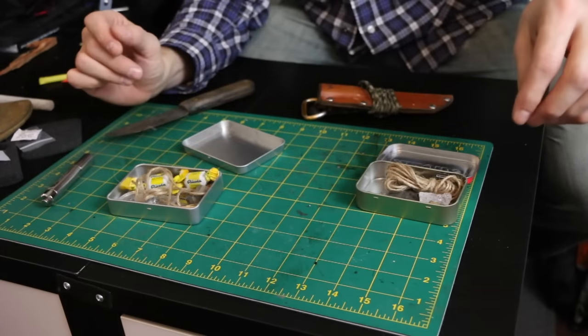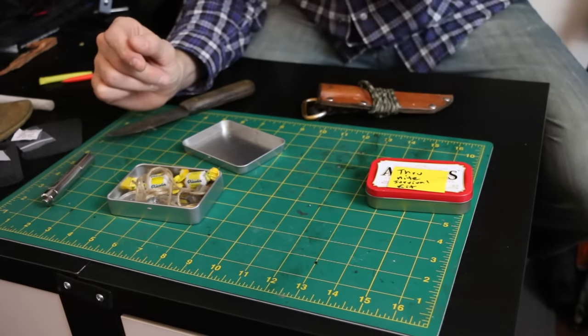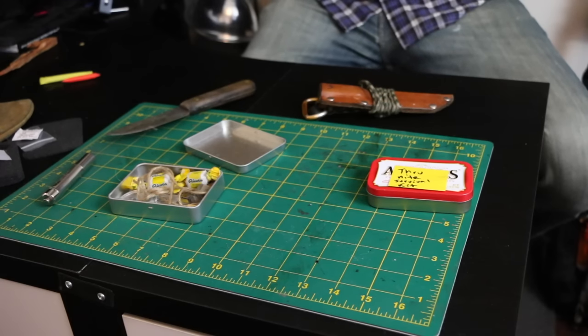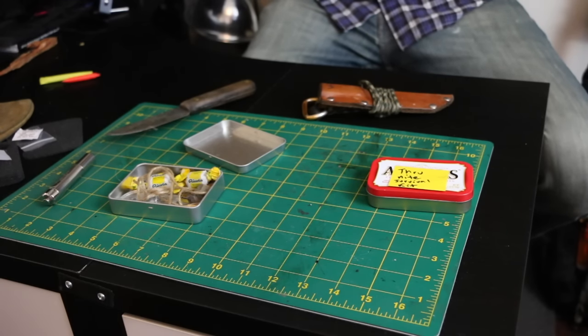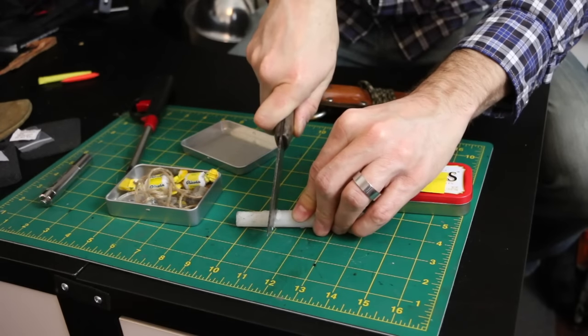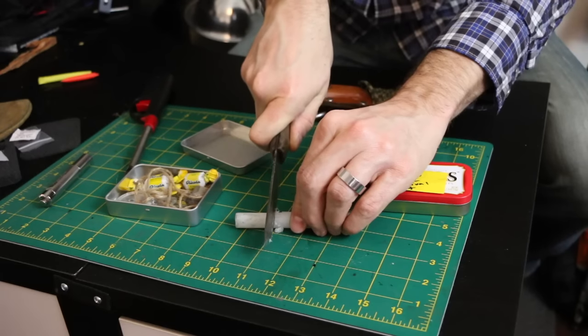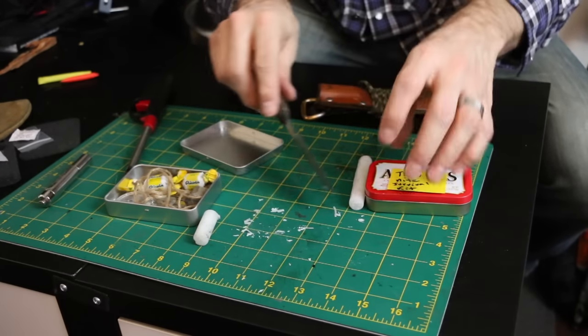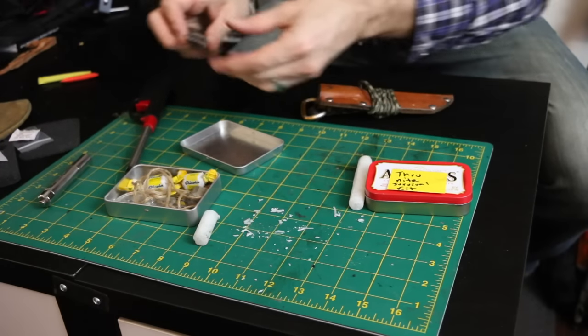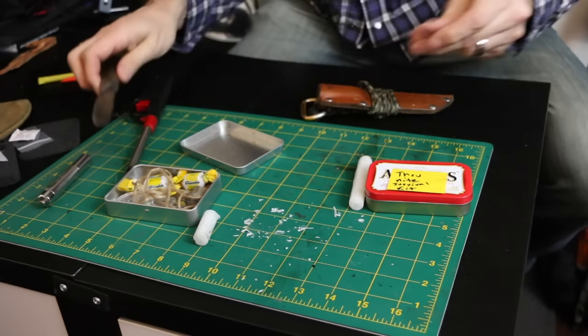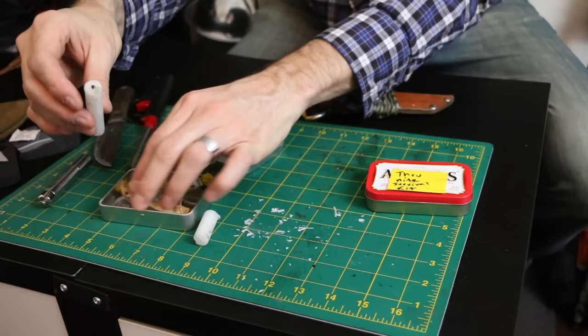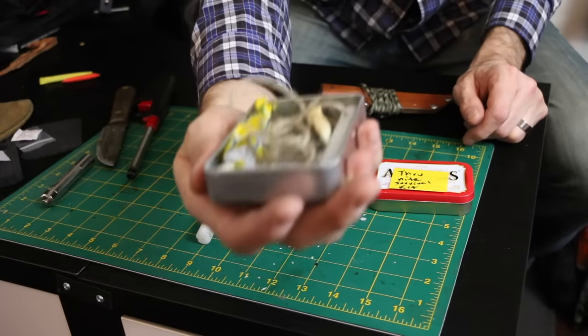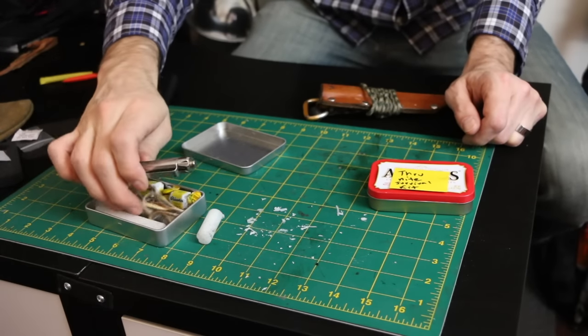I'm going to put four pieces, and that can give me two to four fires just depending on the conditions of the tinder in the area. I'm going to put that jute in there, a piece of flint. Make sure my flashlight fits.